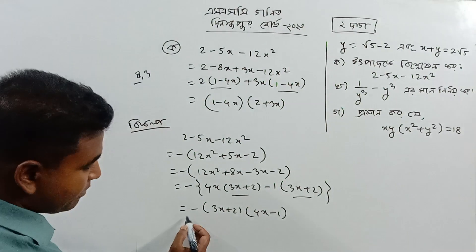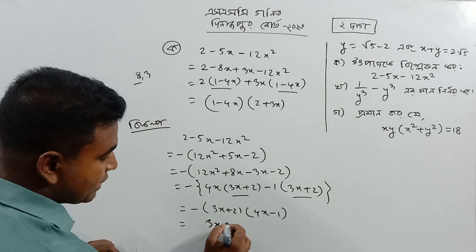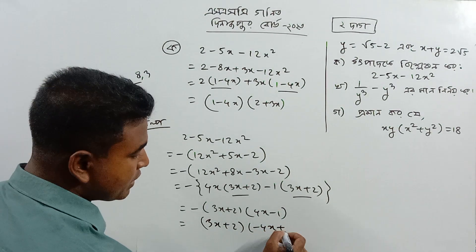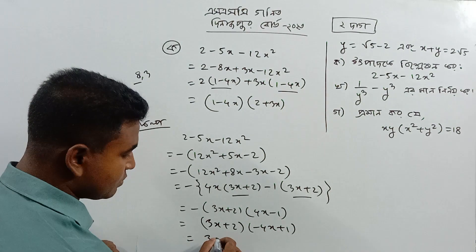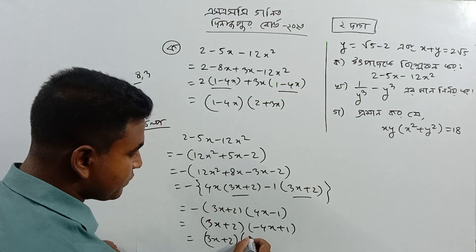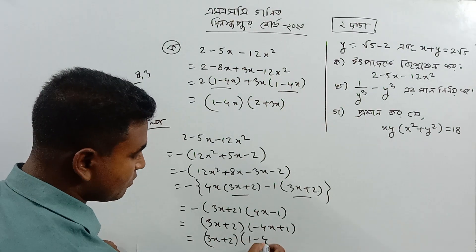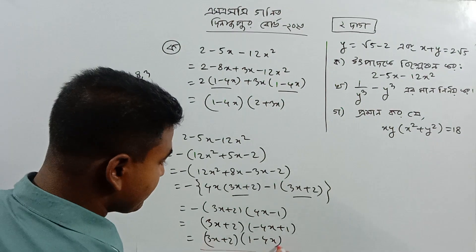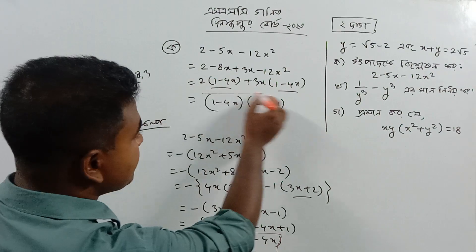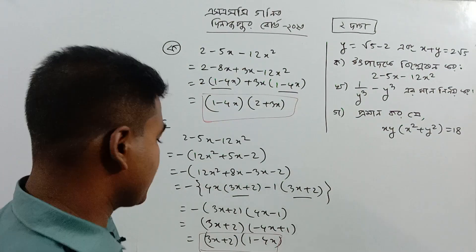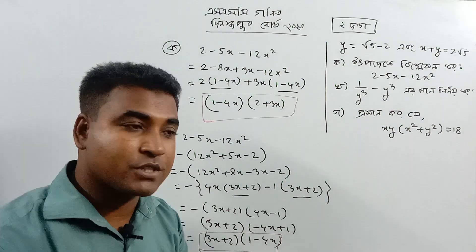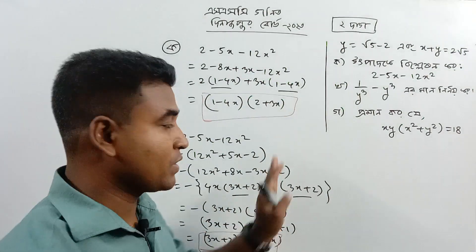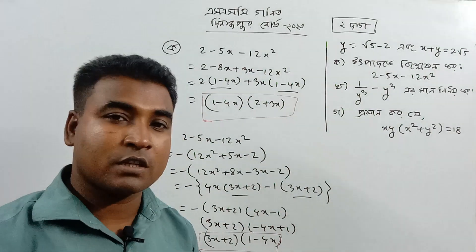You can give minus 1 and add minus 1, then minus 4x plus 1. That means you will have 3x plus 2 on minus 4x. You see, if you find the same factor, you can find the common factor. If you have to solve this problem, you can solve the problem.